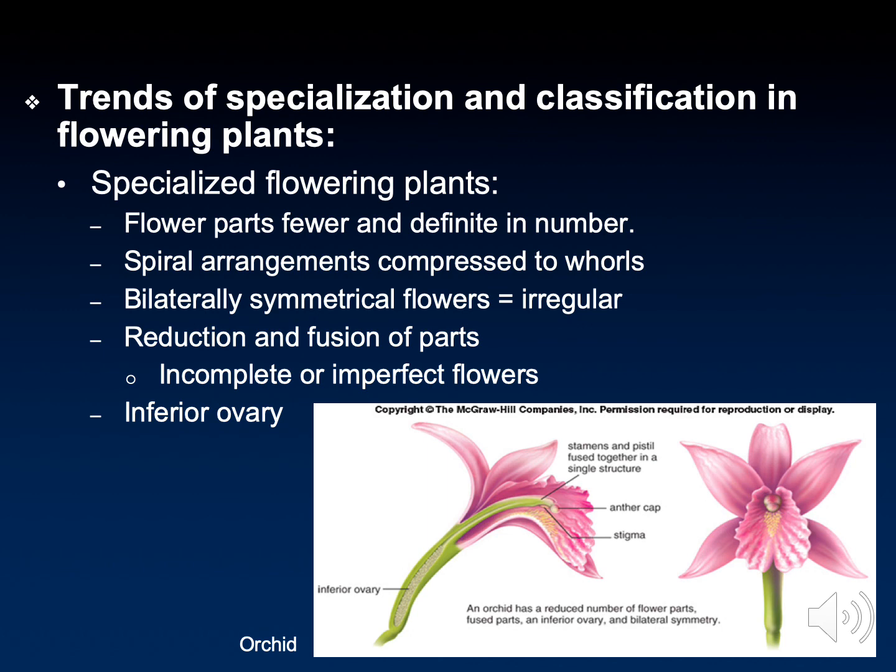Angiosperms perform double fertilization. Both sperm have a job — one sperm unites with the egg, forming the zygote and then becoming the embryo, the developing plant. The other sperm unites with the central nuclei in the middle and develops into the triploid endosperm. Endosperm is the nutritional food that supports the embryo as it develops. After this, the seed coat forms and the fruit develops. Inside the seed, the embryo develops with cotyledons, or seed leaves, and other essential plant parts.